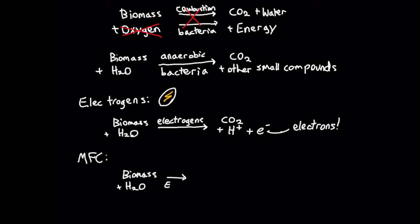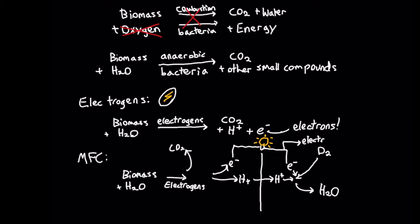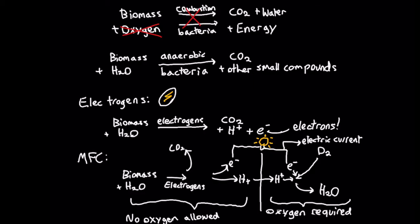In order to generate an electric current and complete the reaction, the hydrogen ions and electrons combine with oxygen in a separated area to form water. Oxygen must be kept separate from the bacteria region so that it cannot harm the bacteria or combine with the hydrogen ions and electrons without them entering the circuit.